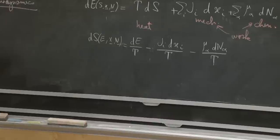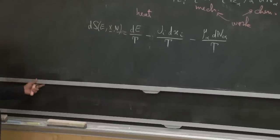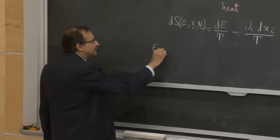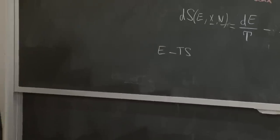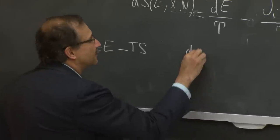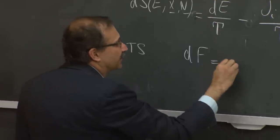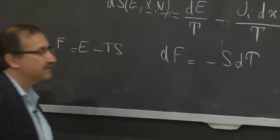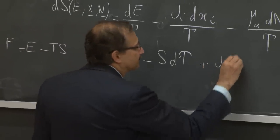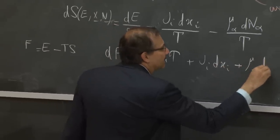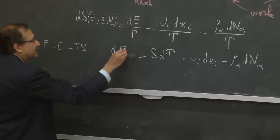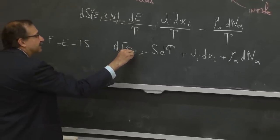Other versions are possible. For example, we could look at E − TS, the quantity we call F. Then dF would look very much like the original equation — rather than T dS, we would get −S dT. For this quantity F, the natural variables are T, X, and N.